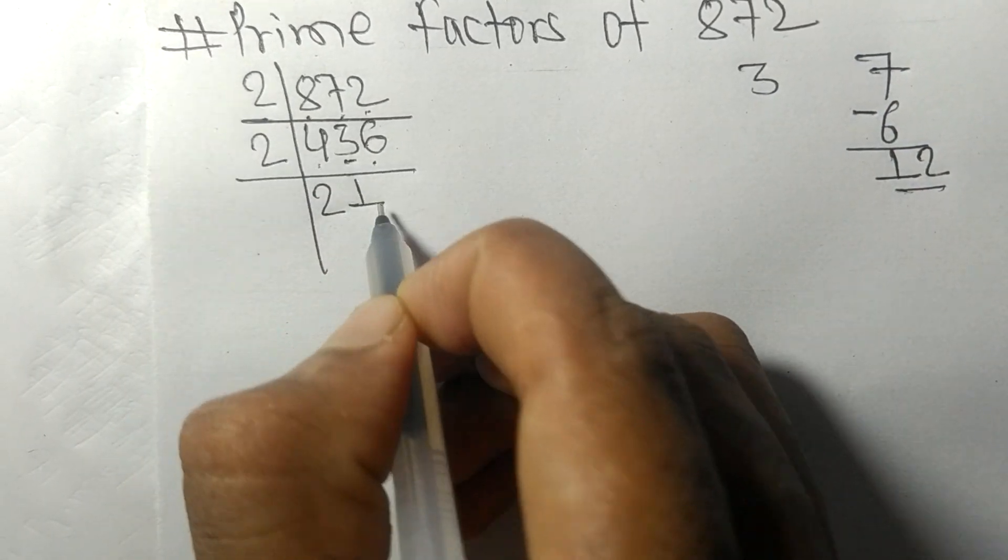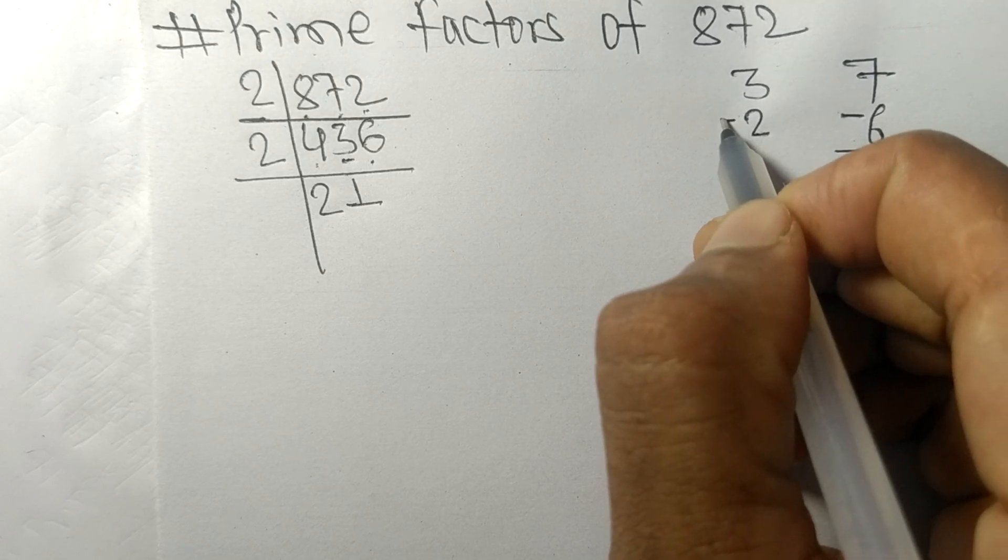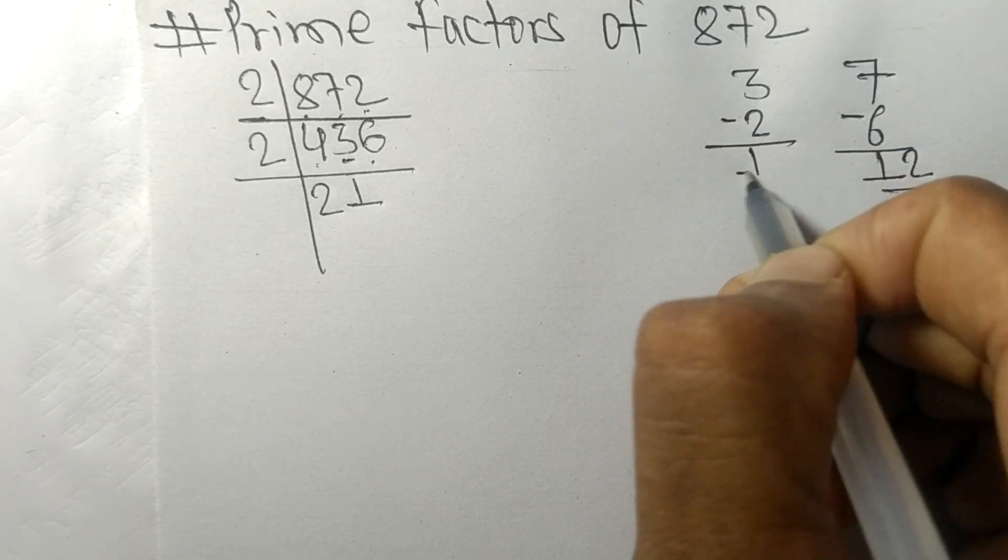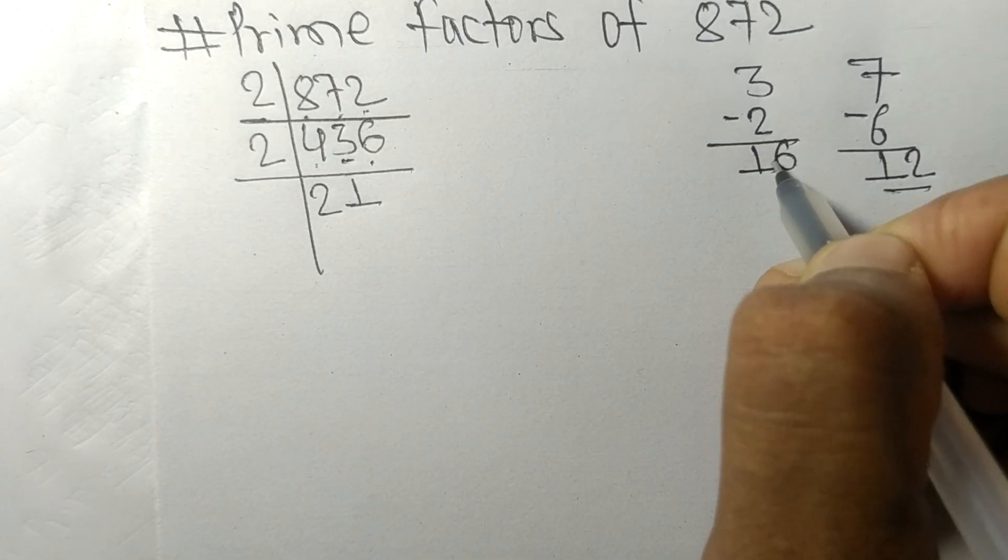So 2 times 1 is 2. On subtracting we get 1, and this 6 becomes 16.